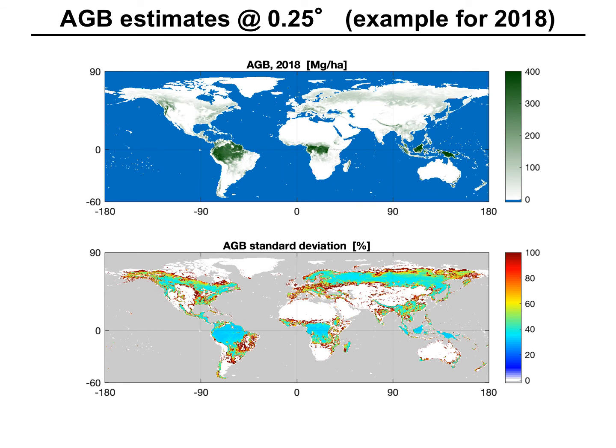This is an example of one of the maps, and what we also did was compute the uncertainties. Uncertainties were quantified for each of the model parameters, for each input observation, for the allometries, and were propagated throughout the retrieval chain. This map here shows the uncertainty quantified as standard deviation relative to the estimated AGB.